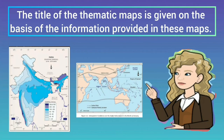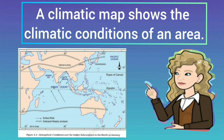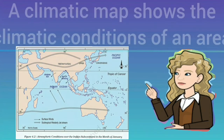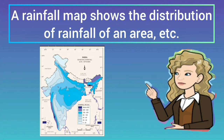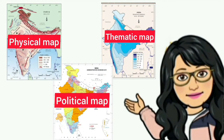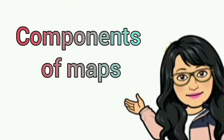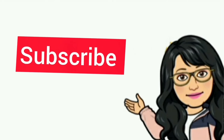Thematic maps show the distribution of forests, crops, minerals, industries, etc. The title of thematic maps is given on the basis of the information provided. For example, a climatic map shows the climatic conditions of an area; similarly, a rainfall map shows the distribution of rainfall of an area. Now you can easily identify the different types of maps available to us. In the next video we will continue with components of maps.